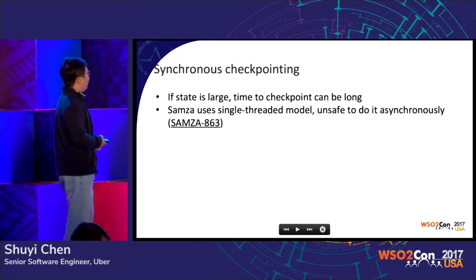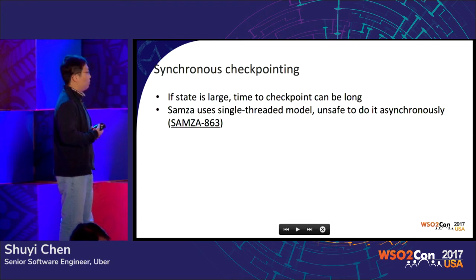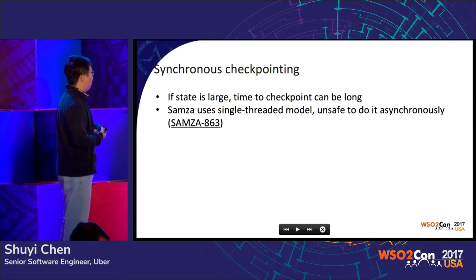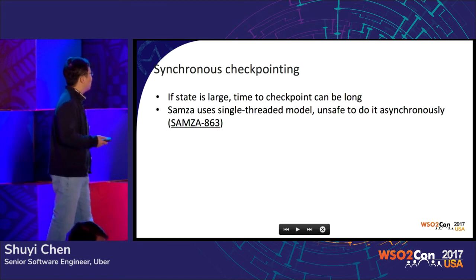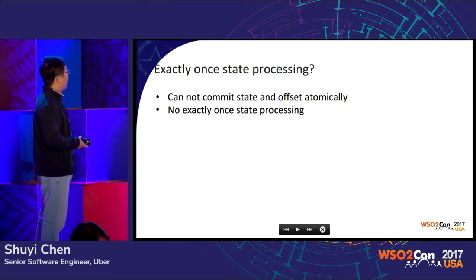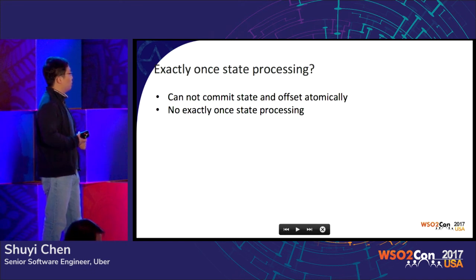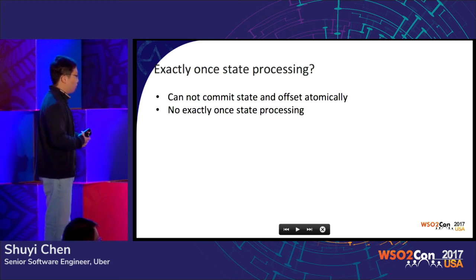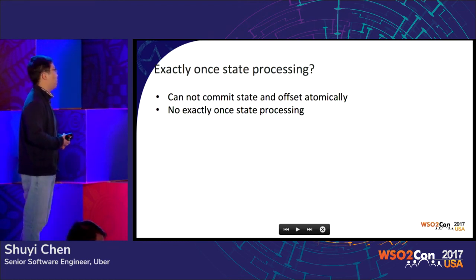The second challenge is that SAMZA used a single-threaded model to process messages. When we do checkpointing, if the state is large, it would take a long time to write the state checkpoint to an external system. The open-source community is addressing this by providing multi-threaded support, which I believe was just recently released. The third challenge is exactly-once state processing. Upon crash and recovery, some states might be double-counted. Currently, we don't have a good solution for this under SAMZA because it does not allow us to commit state and the Kafka offset atomically, so we don't have exactly-once state processing.